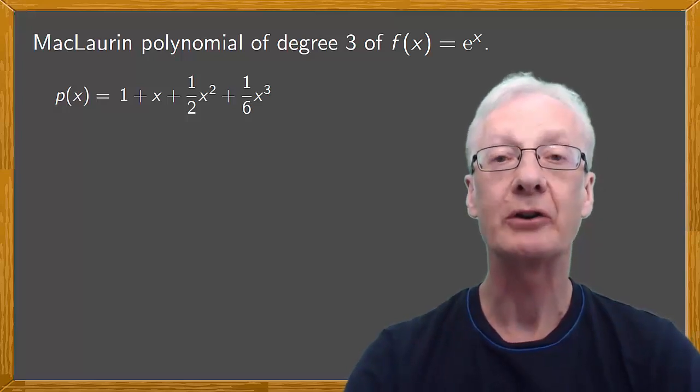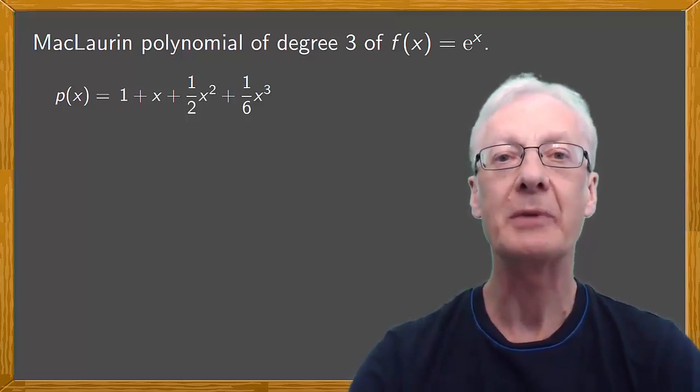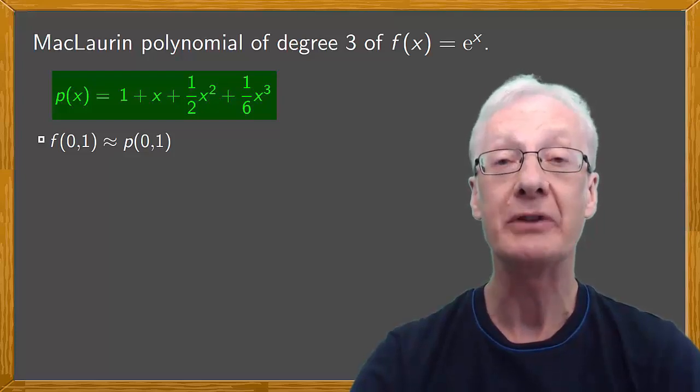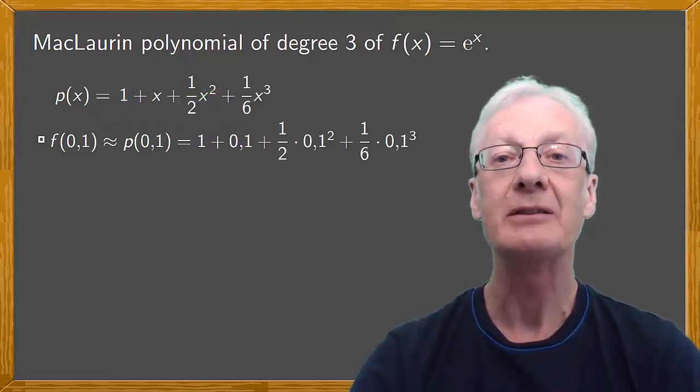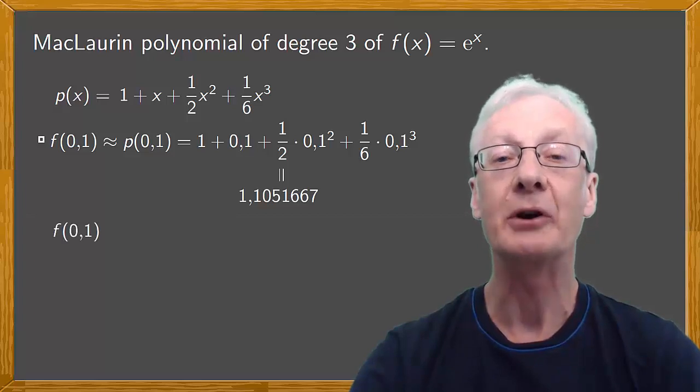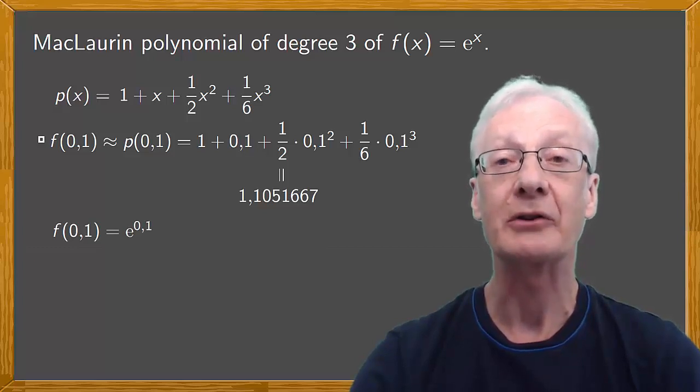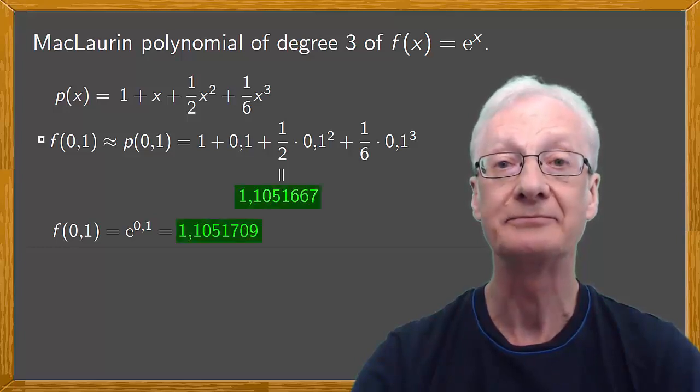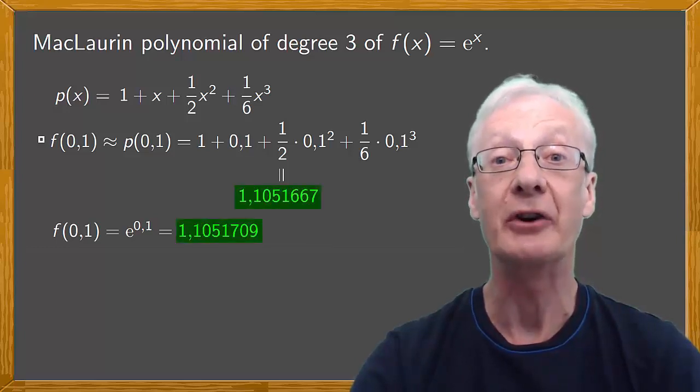For instance, since 0.1 is close to 0, in theory, we can approximate f(0.1) by p(0.1) by substituting in the polynomial the value 0.1. If we do this, we obtain the value 1.1051667. And if we evaluate f(0.1) using a calculator, that is e raised to the 0.1, the exact result is 1.1051709. As you can see, the approximation is very good. It gives the same value to four decimal places.